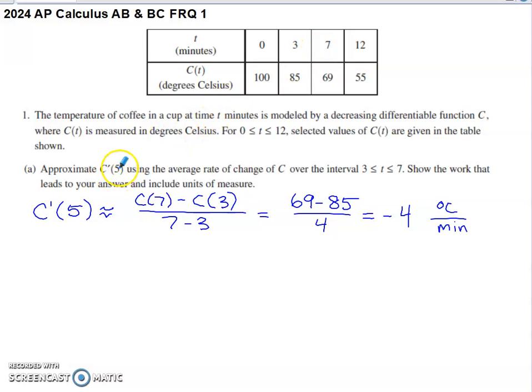We can estimate the tangent slope for this function C at 5 by using the secant slope on the interval that has 5 as its midpoint, which would be the interval 3 to 7. An average rate of change is just a standard slope calculation. I'm going to need to take C of 7 minus C of 3 and divide by the corresponding difference in time values. It does ask us to include units of measure, so we've got degrees Celsius per minute for our ending units for part A.